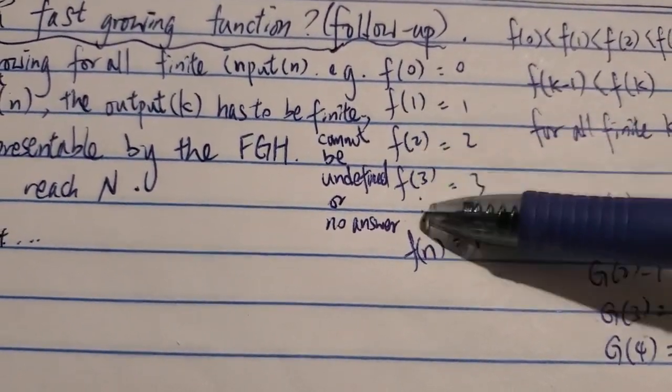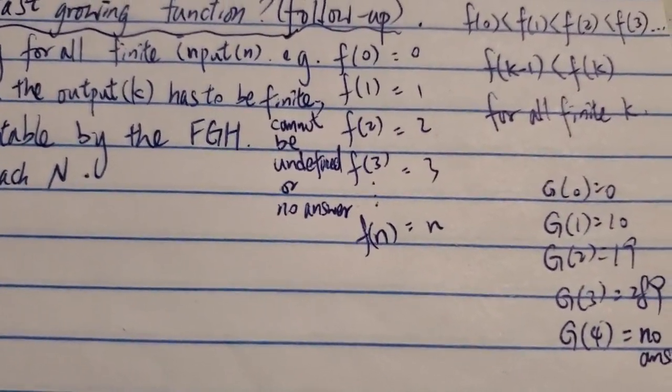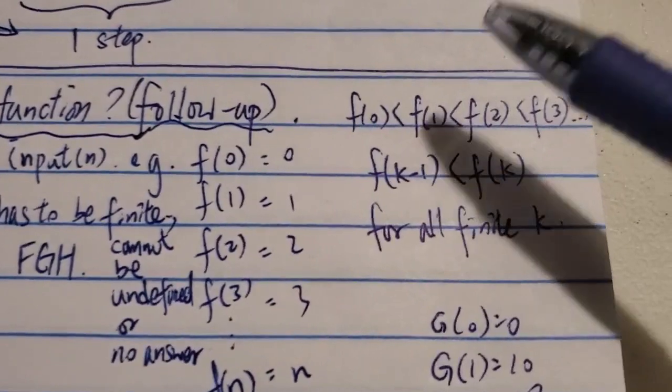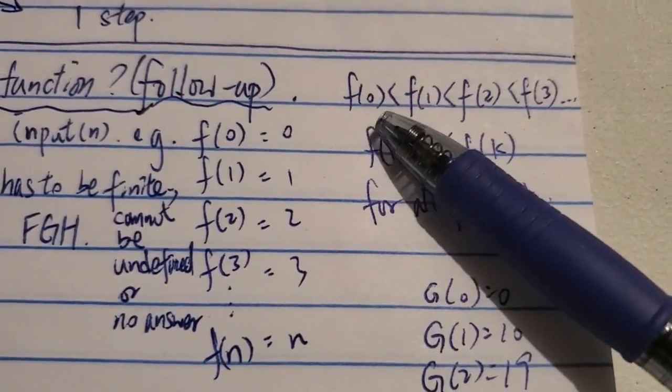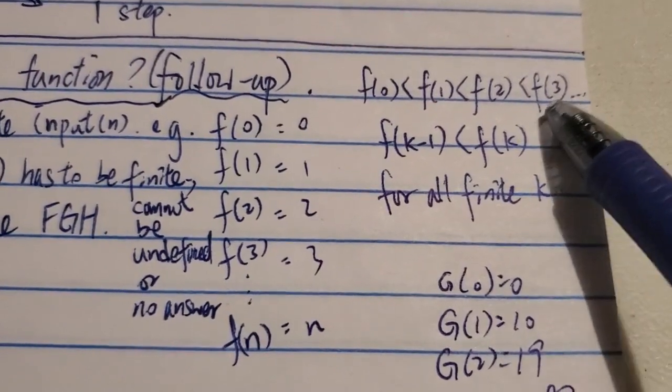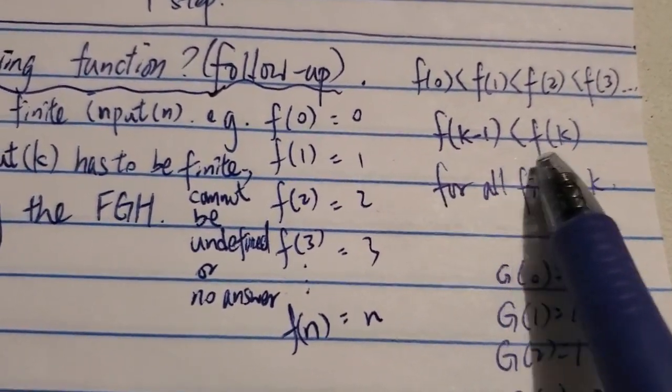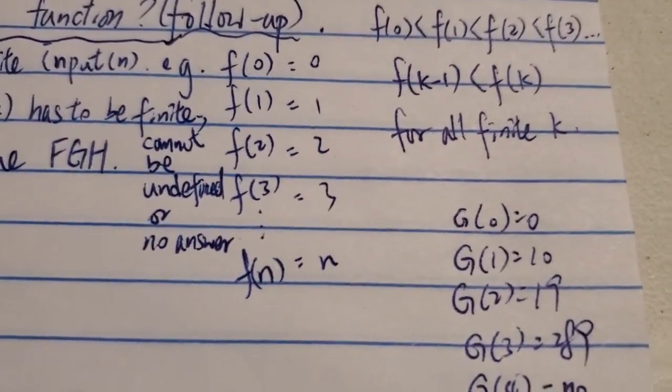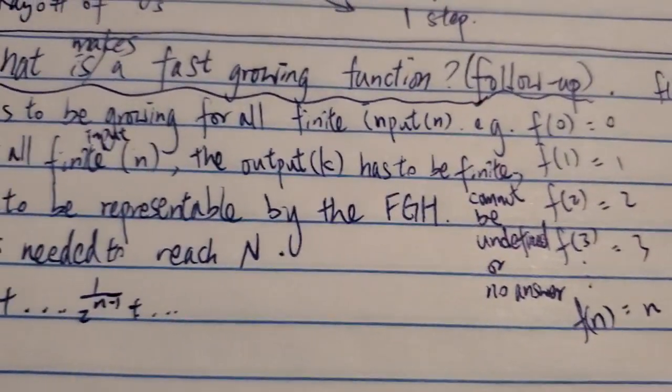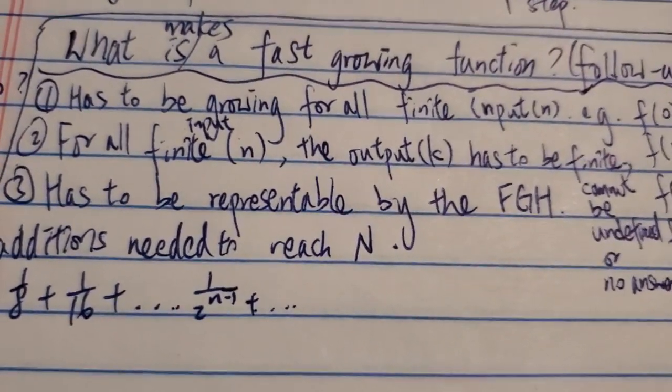Each increasing n, the output has to be increasing. It cannot be the same or decrease. So in other words, f(0) is smaller than f(1), smaller than f(2), which is smaller than f(3), etc. So therefore, f(k-1) has to be smaller than f(k) for all finite k. So that's one of the important definitions for a fast-growing function.